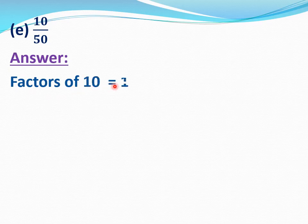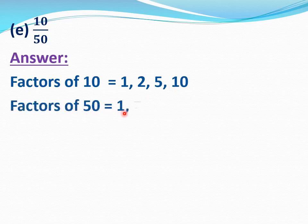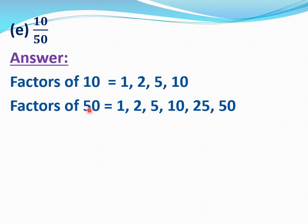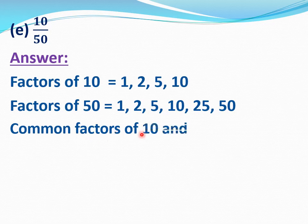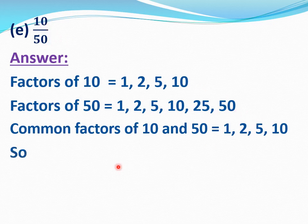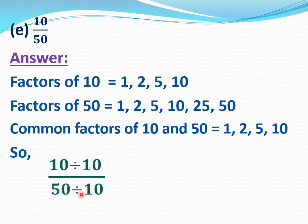Now E part, 10 by 50. We have to reduce 10 by 50 to its lowest form. Find the factors of 10 and 50. Factors of 10 equal 1, 2, 5, and 10. Factors of 50 equal 1, 2, 5, 10, 25, and 50. Common factors of 10 and 50 equal 1, 2, 5, and 10. 10 is the highest common factor. We will divide 10 by 50 by 10: 10 divide 10 and 50 divide 10 equal 1 by 5. 10 by 50 equal 1 by 5; 1 by 5 is the lowest form.